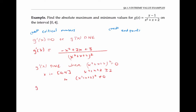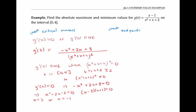To find where g prime of x is equal to zero, we just have to check where the numerator is equal to zero. So I'll set negative x squared plus two x plus three equal to zero and multiply both sides by negative one. Factoring, I get x equals three or x equals negative one. But notice that x equals negative one doesn't lie within my interval from zero to four, so I only have to worry about x equals three.